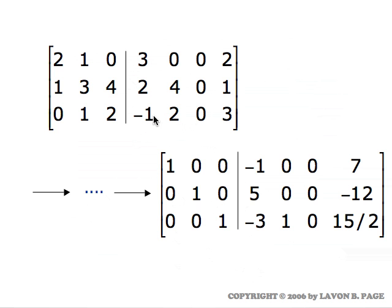If you were to start with this and perform the row operations to solve the system, you would wind up with the identity on the left and all the solution columns on the right, which you can then interpret as the solution for the four systems of equations — these numbers being the x, y, and z values for the first system, the second, the third, and the fourth.